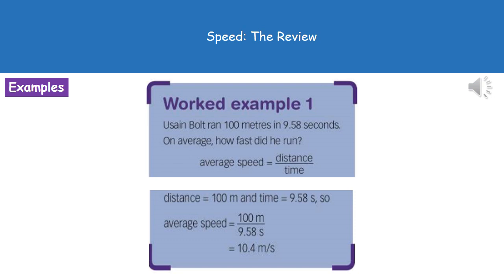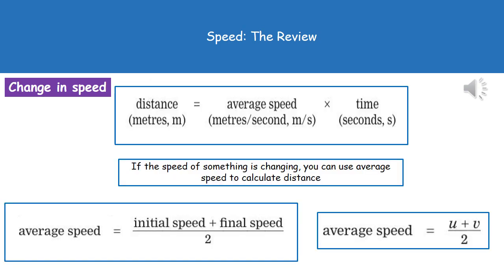Our distance from the actual question is 100 meters, the time is 9.58 seconds. So all we have to do there is 100 divided by 9.58, which gives us 10.4 meters per second.